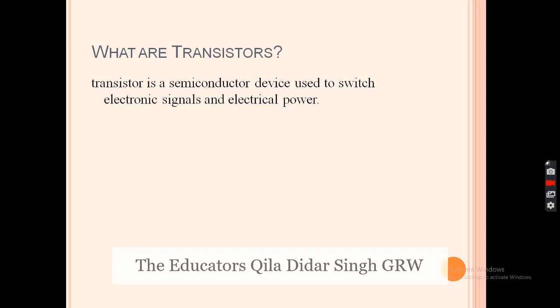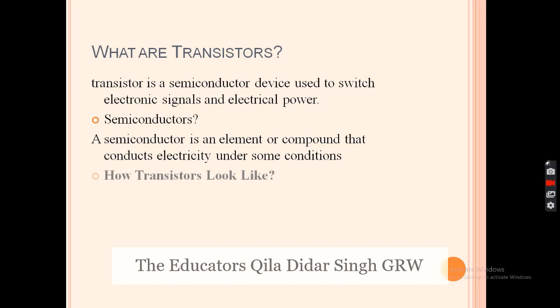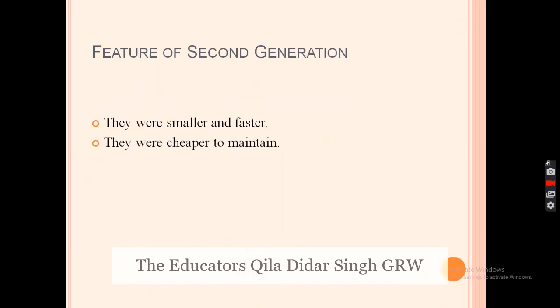When we think about transistors, a transistor is a semiconductor device. A semiconductor is an element or compound that conducts electricity under some conditions. You can see the picture of how a transistor looks. The features of second generation computers are: they are smaller, faster, and cheaper to maintain.